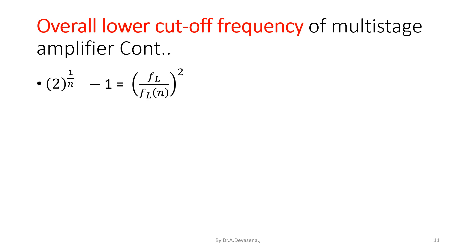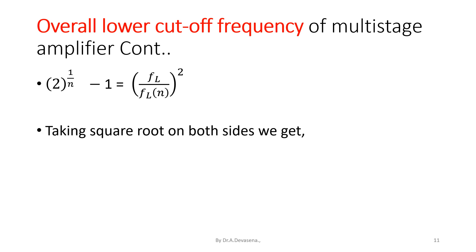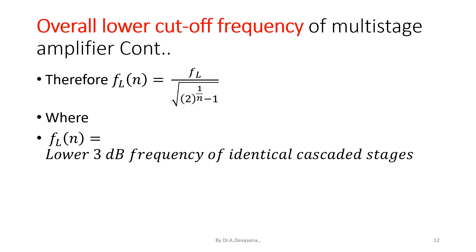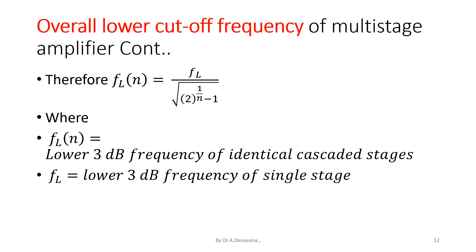If we simplify the above equation, we get root 2 is equal to square root of (1 plus (FL by FL(N)) squared) to the whole power N. Taking the Nth root on both sides, we get 2 to the power 1/N minus 1 is equal to (FL divided by FL(N)) squared. Taking the square root, FL(N) is equal to FL divided by square root of (2 to the power 1/N minus 1), where FL(N) is the lower 3 dB frequency of identical cascaded stages and FL is the lower 3 dB frequency of single stage.